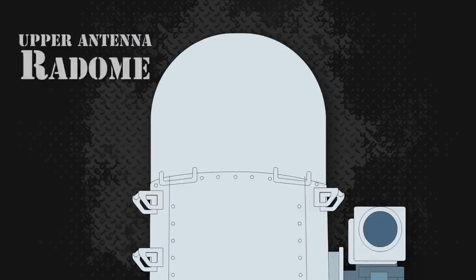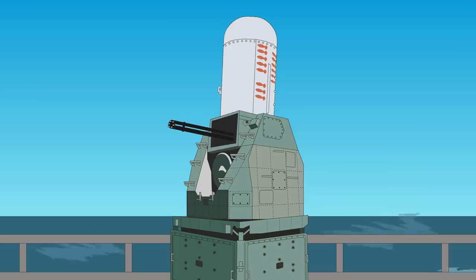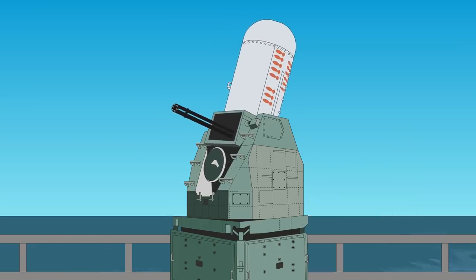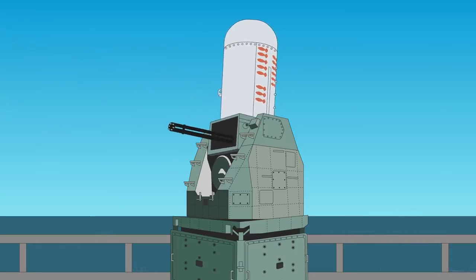Due to the distinctive shape of the upper antenna radome, it has been nicknamed R2-D2, after the Star Wars movie's robot character. The first Phalanx prototype was installed aboard the USS King in 1973, but the full trial only began in 1977 aboard the USS Bigelow. After passing a series of tests, the Phalanx was put into serial production in 1978.